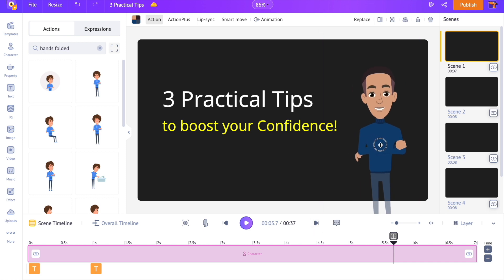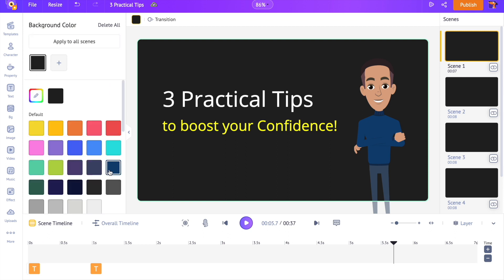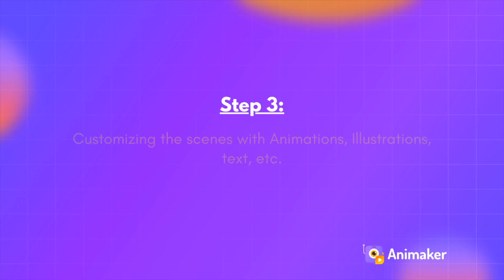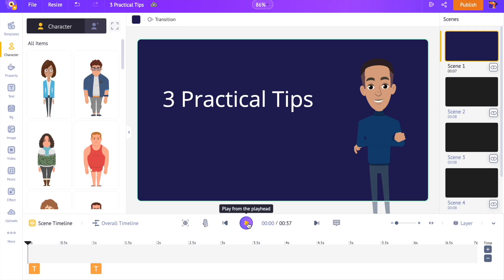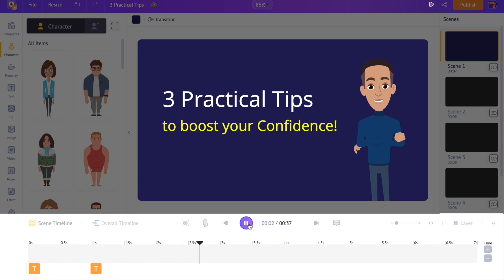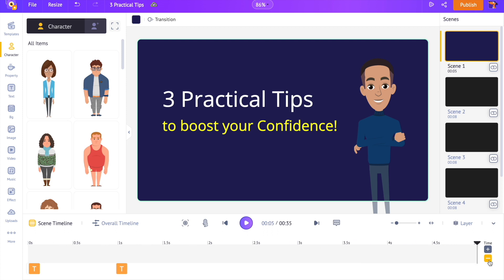As the next step, I want to change the color of the background. Click anywhere on the workspace and you can see the option to change the background color. You can even create a gradient background by selecting multiple colors, but for this video I'm going to stick with one color. Step 3: Customizing the scenes with animations, illustrations, text, etc. Let's preview the scene using the scene preview option — the duration of the scene is pretty long, so let's reduce it to 5 seconds using the plus and minus options on the timeline.